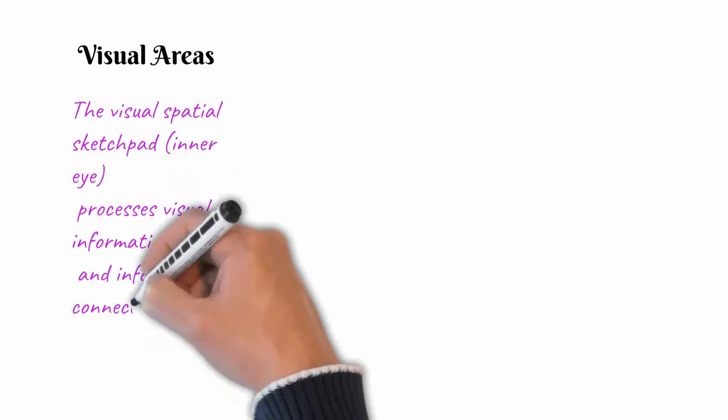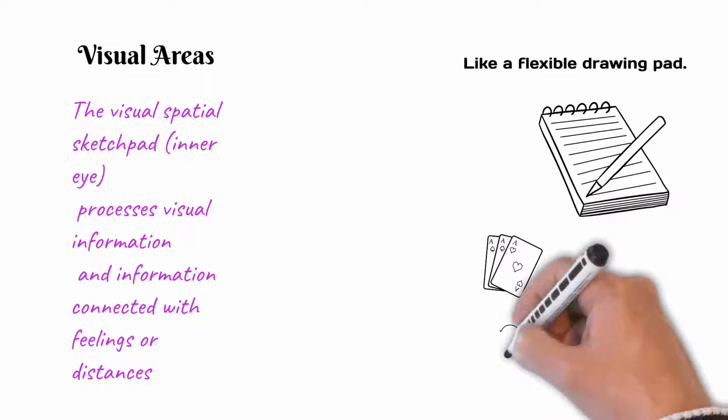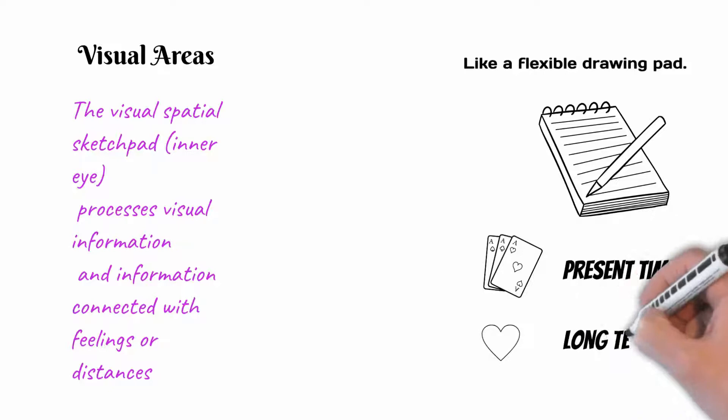Let's look at the visual system. The visual spatial sketchpad, inner eye, processes visual information and information connected with feelings or distances. If you mentally imagine a playing card, you are using your sketchpad to imagine it. You may see, mentally, images of objects such as hearts that use long-term information to imagine a present-time object such as this card.